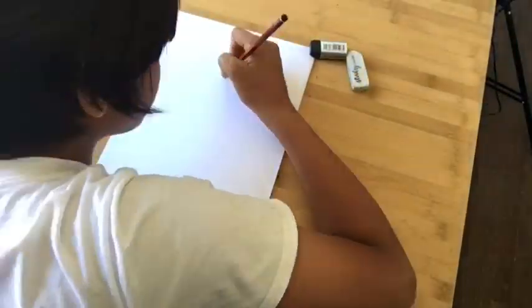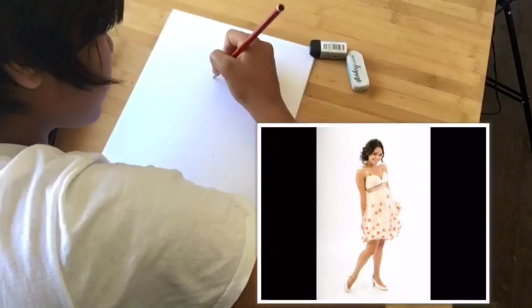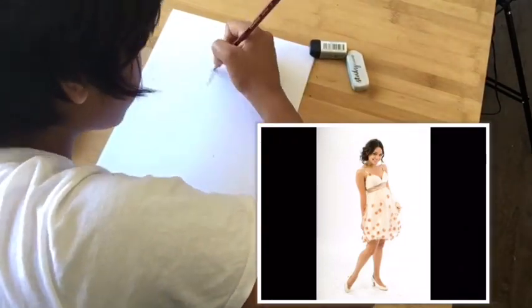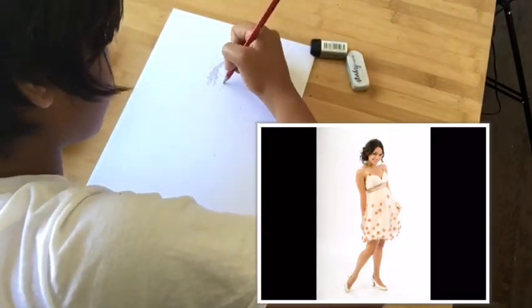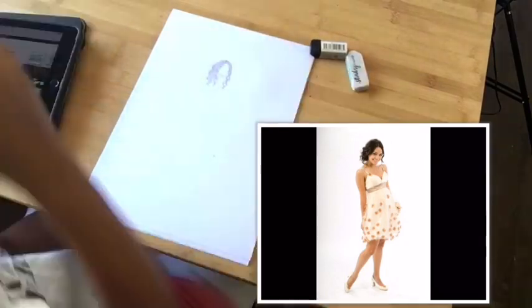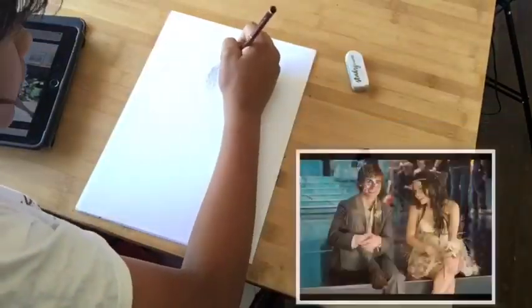Today I am drawing Vanessa Hudgens from the show High School Musical. I'm drawing her in a prom dress that she wore in the songs A Night to Remember and Can I Have This Dance, which is at the end of the movie.